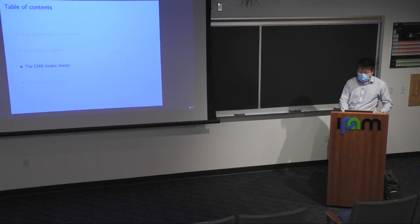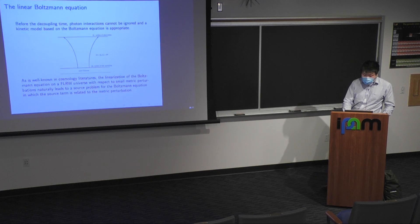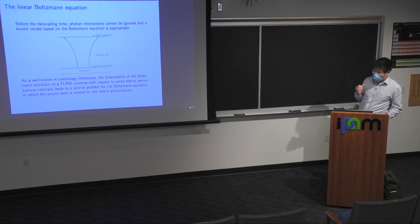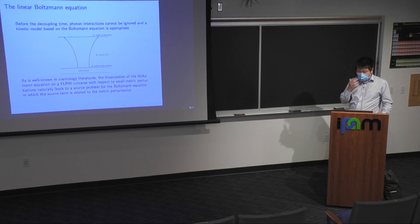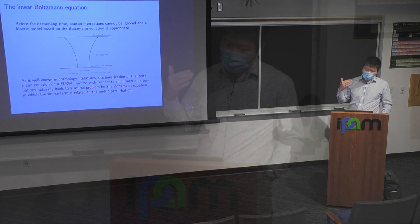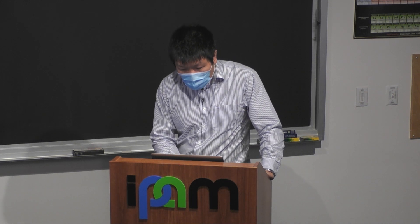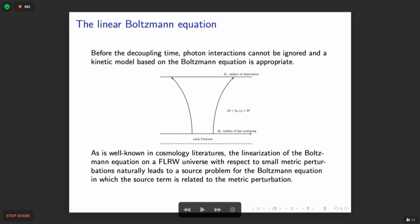Now why do we need the kinetic theory? This is where we do not want to ignore photon interactions. For example, if you want to go beyond the surface of last scattering — not all the way to the initial singularity, but to a stage where photons are formed but still interacting with each other — then we need a Boltzmann equation model. This is well-known in cosmology.